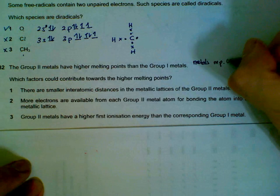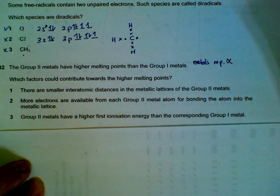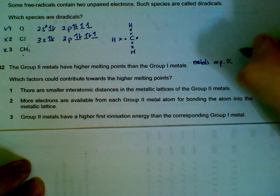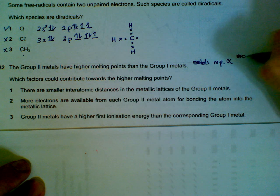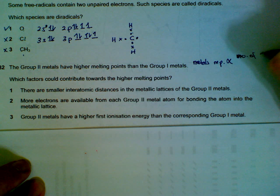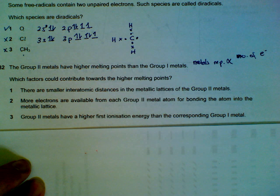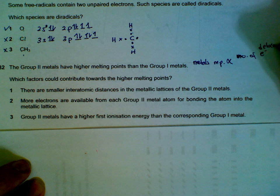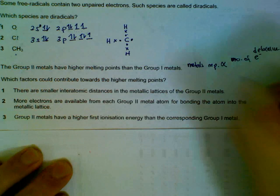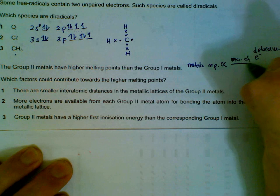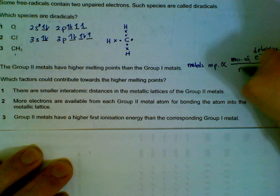The more delocalized electrons you have, it's like a glue that holds them together. The higher the melting point will be, the higher the metallic bonding will be. So it is proportional to number of delocalized electrons, number of electrons that goes into the sea of electrons.